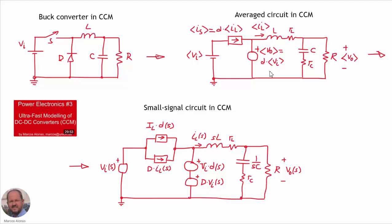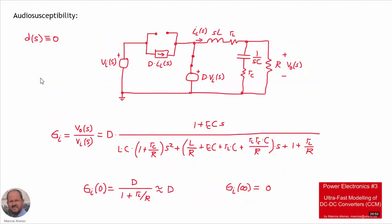From the average circuit, we can take perturbations and obtain the small signal circuit of the buck converter in continuous conduction mode. From this circuit, we can obtain the different characteristics of our converter, including the audio susceptibility transfer function. To obtain it from the small signal circuit, we only consider that there are no perturbations on the duty cycle, so the current source becomes an open circuit and the voltage source becomes a short circuit. By solving this circuit, we can obtain the output voltage over the input voltage, as shown by the equation corresponding to the audio susceptibility transfer function.